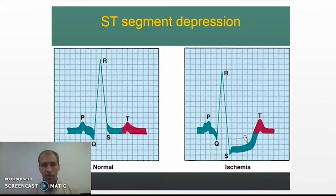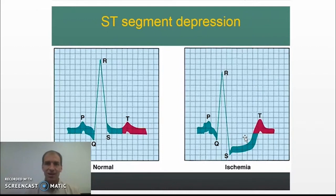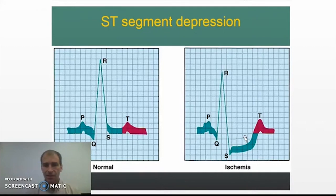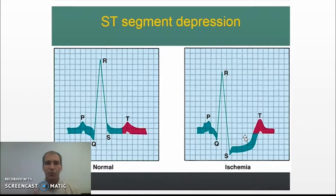ST segment depression is the classic sign on an EKG that the heart muscle is not getting enough oxygen. This is so important — if you've ever had a stress test, this is one of the key indicators we look for: when the heart is stressed through exercise or something else, is that increased need for oxygen being met? If it's not, we'll see ischemia, which means there's likely some heart disease and further clinical steps need to be taken.